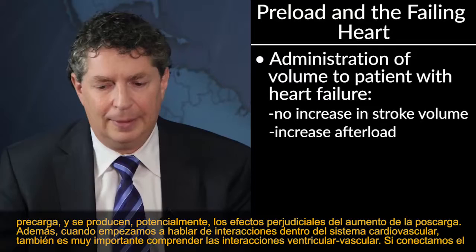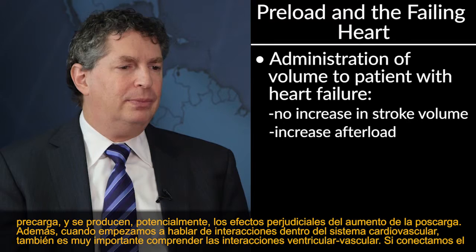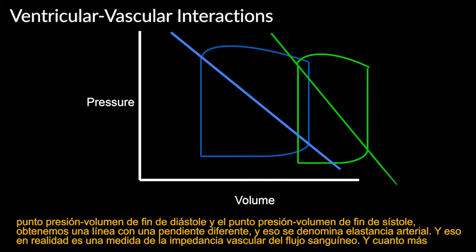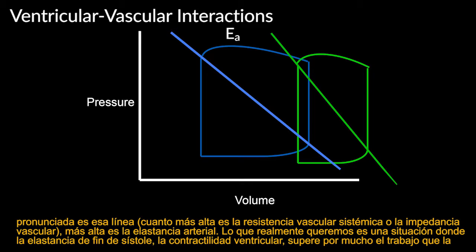Another important concept is ventricular-vascular interaction. Connecting the end-diastolic and end-systolic pressure-volume points gives a line called arterial elastance — a measure of vascular impedance. The steeper that line, the higher the systemic vascular resistance. Ideally, end-systolic elastance (ventricular contractility) should far exceed the work the vasculature demands. You want the EES slope to exceed the arterial elastance slope.